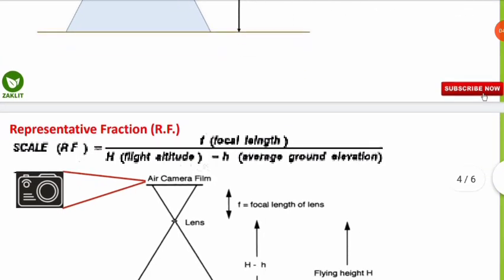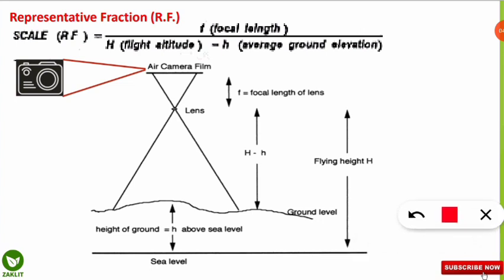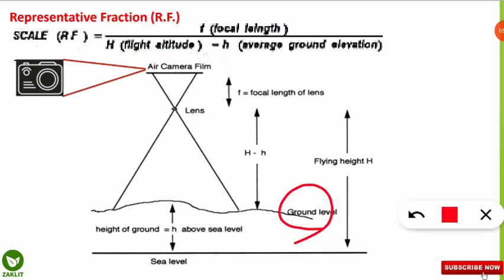There is one more important formula to note. If the terrain is not flat — if it has unevenness or is above sea level — then the formula for scale, also called the RF (representative fraction), changes. In that case the formula becomes: focal length divided by (capital H minus small h), where capital H is the flying altitude and small h is the average ground elevation. We must subtract the ground elevation from the flying altitude.